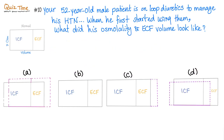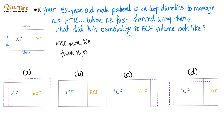Let me answer the question of the previous lecture. Your 52-year-old male patient is on loop diuretics to manage his hypertension. When he first started using the diuretics, what did his osmolality and ECF volume look like? Diuretics in general make you lose more salt than water. Don't ever forget that.